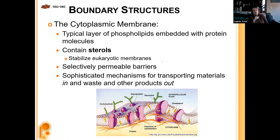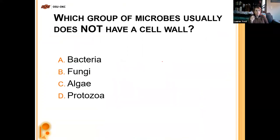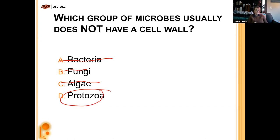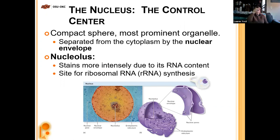Practice question: which microbes usually do not have a cell wall? We just covered that bacteria have peptidoglycan cell walls, and fungi and algae have cell walls too. So the answer is protozoa — they don't have cell walls.